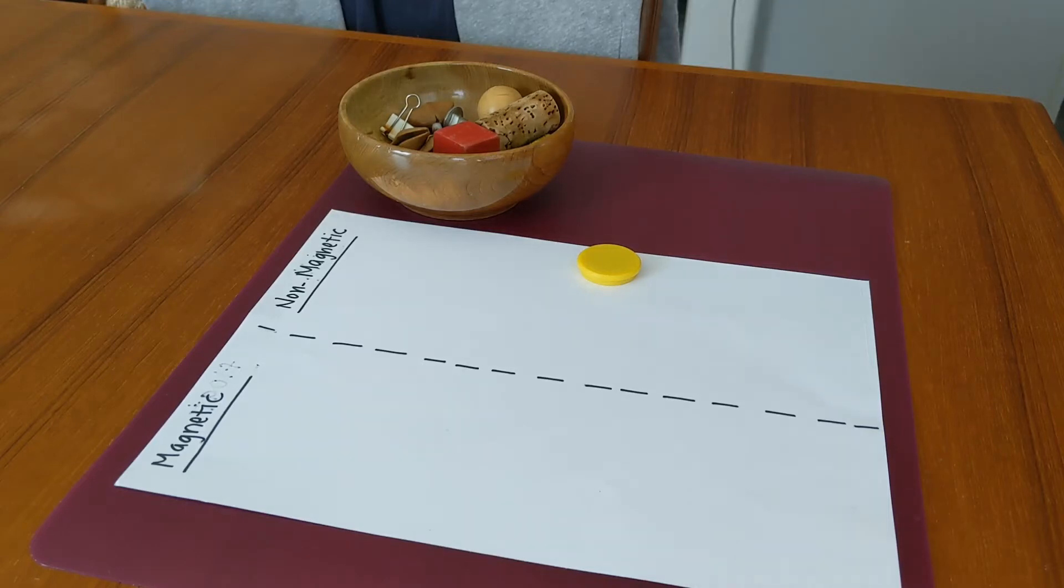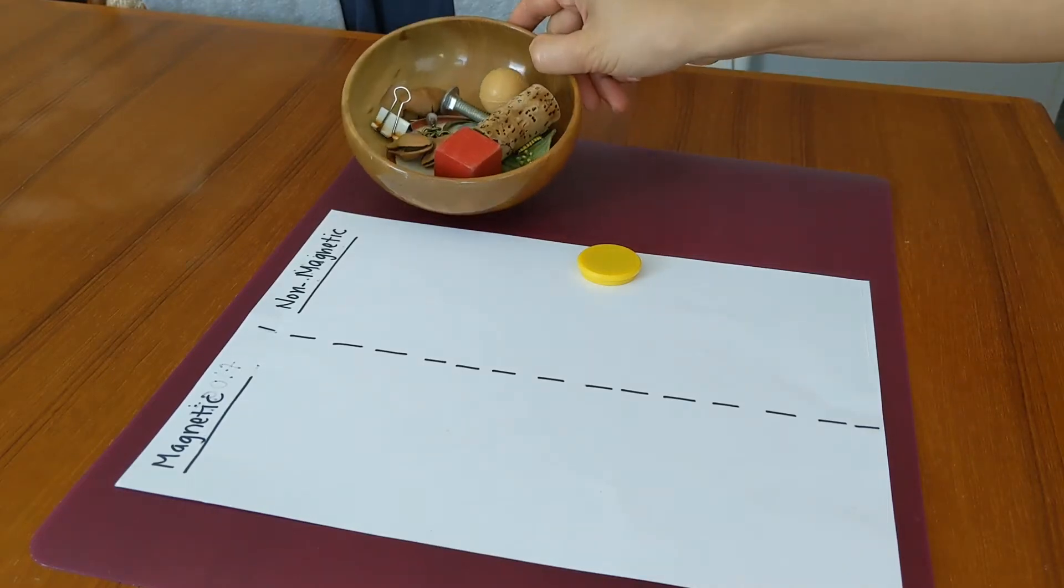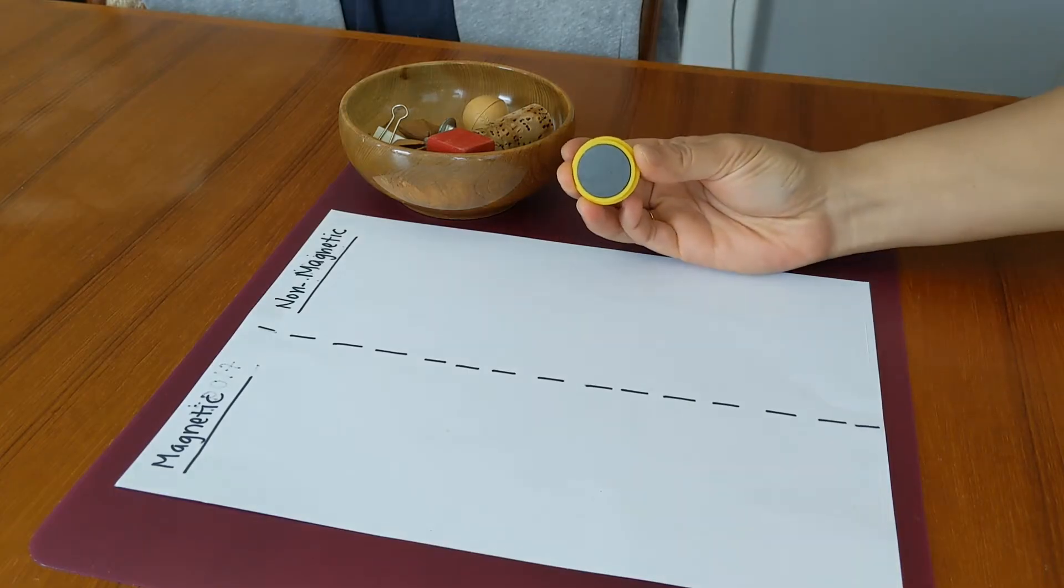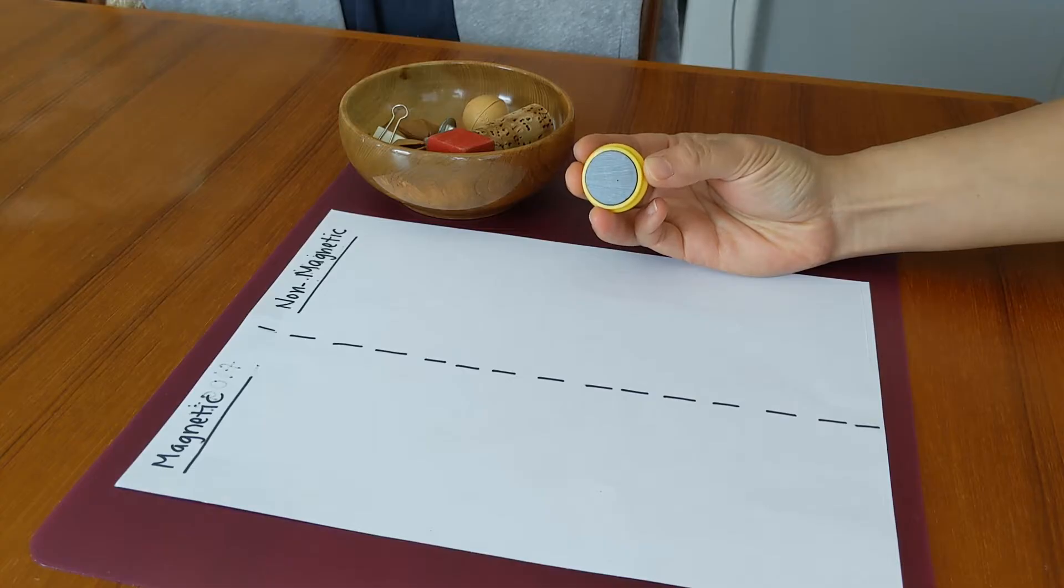This is magnetic, non-magnetic. I went around my house and I found a bunch of objects and I want to test it out to see if they're magnetic or non-magnetic, which means they're going to either be attracted by this magnet, which I got from our refrigerator, or not. So they'll either stick or they won't stick.